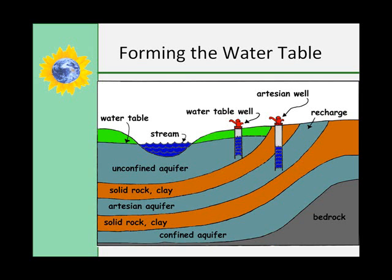When it rains, water enters pores in the soil. If it continues to rain, the water moves downhill until it reaches an impermeable material such as clay or shale, and starts to build up higher and higher. The part of the ground where all pore spaces are filled with water is called the zone of saturation, and the surface of this zone is the water table.